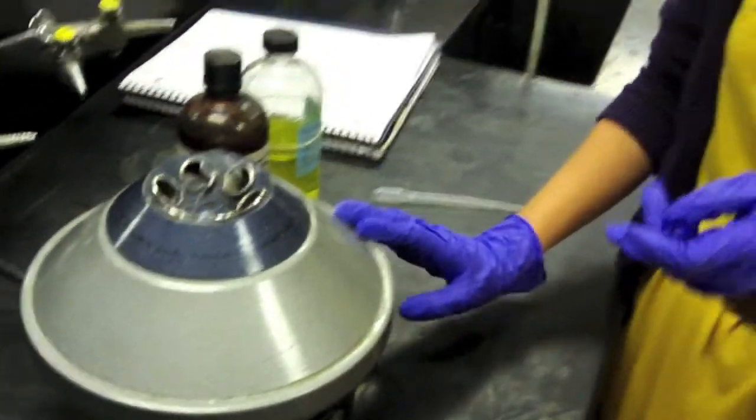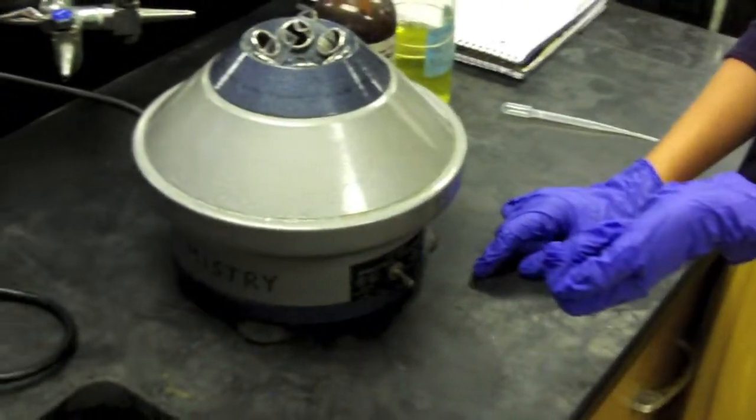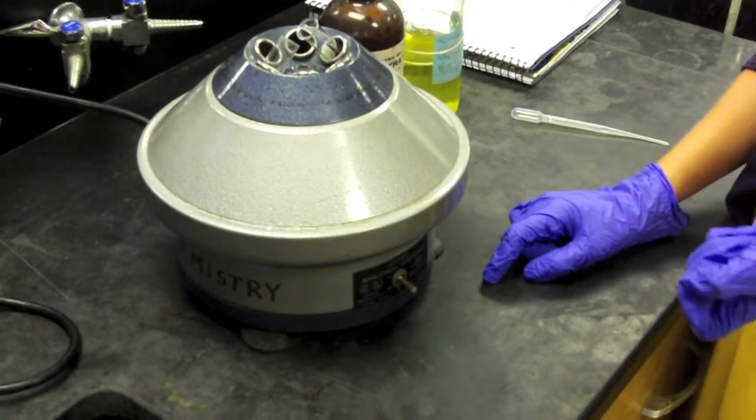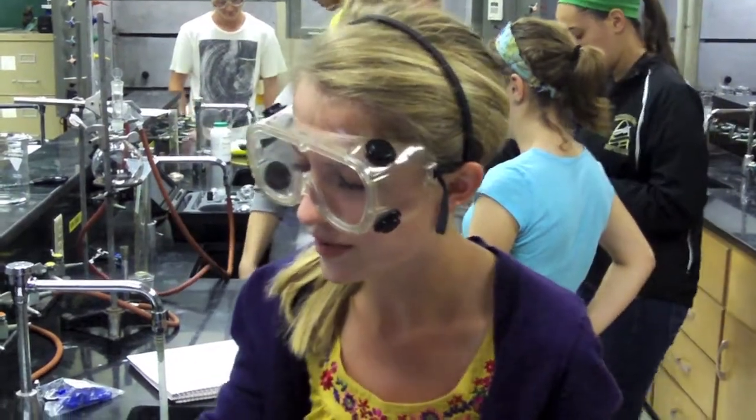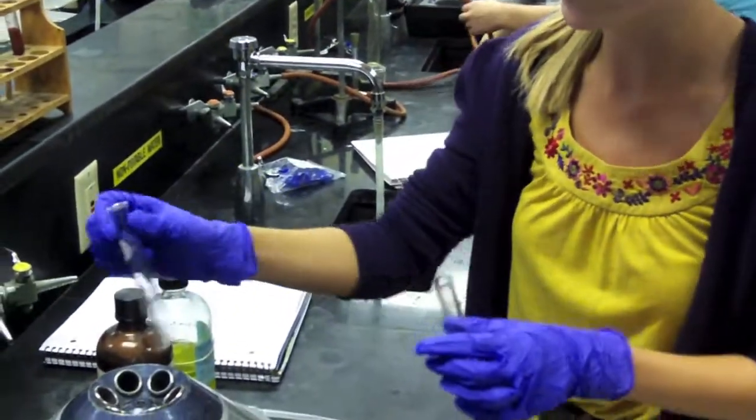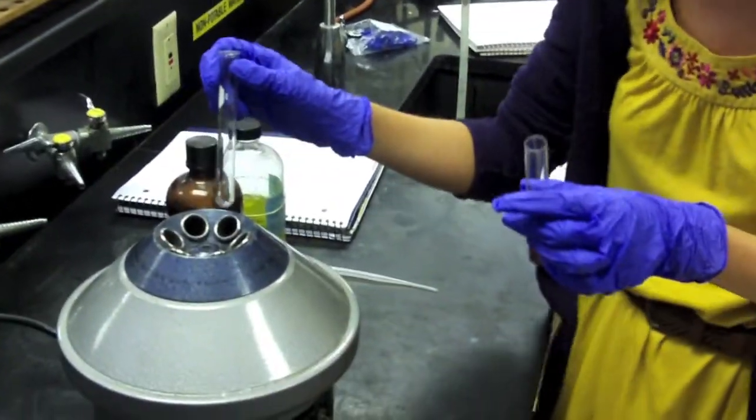Some tips: make sure the centrifuge is on a level surface, and make sure when you turn it on it doesn't begin to rattle, otherwise you should probably turn it off and see what's going on. You want to make sure that there are two test tubes opposite each other so it's balanced.